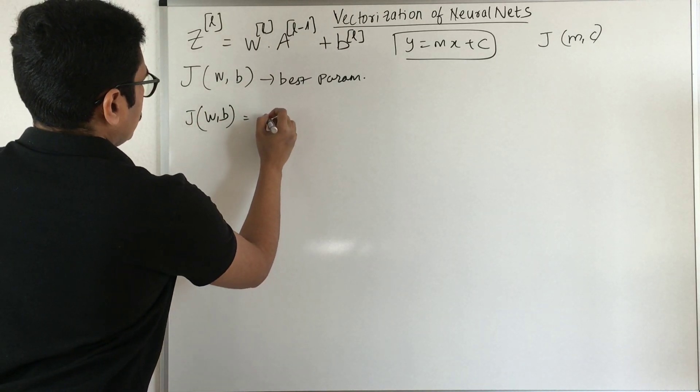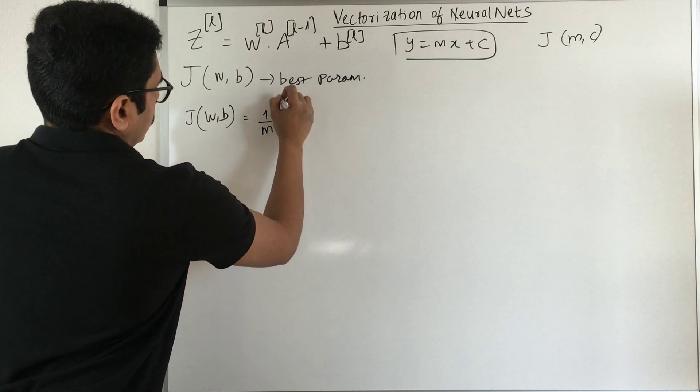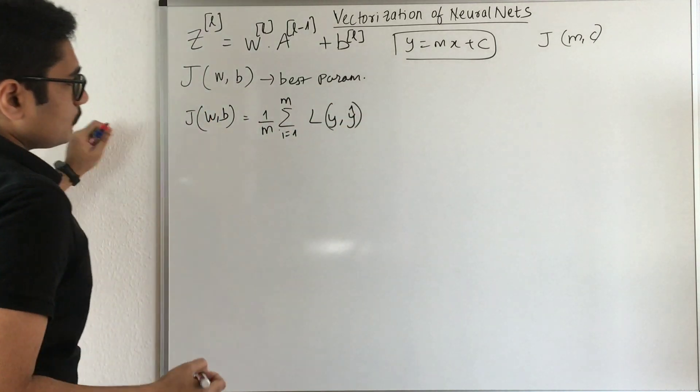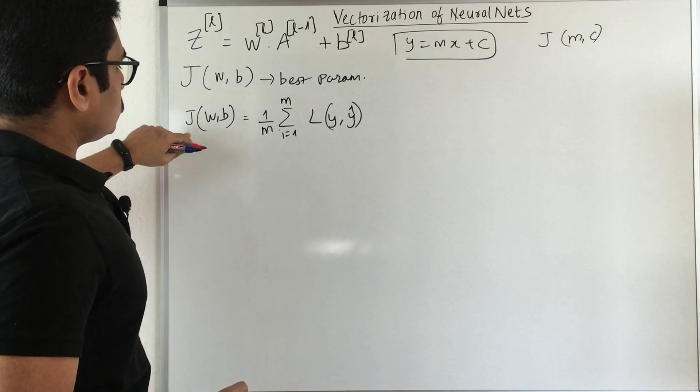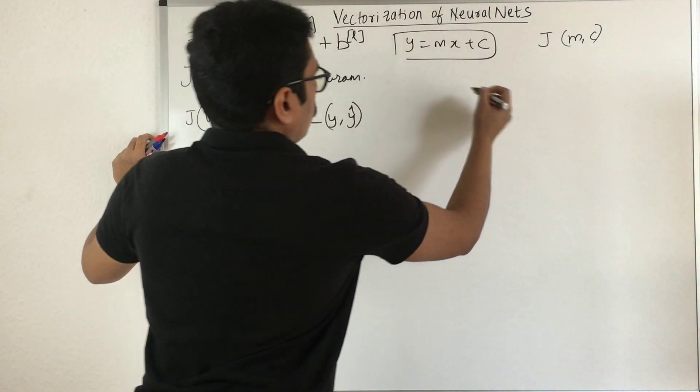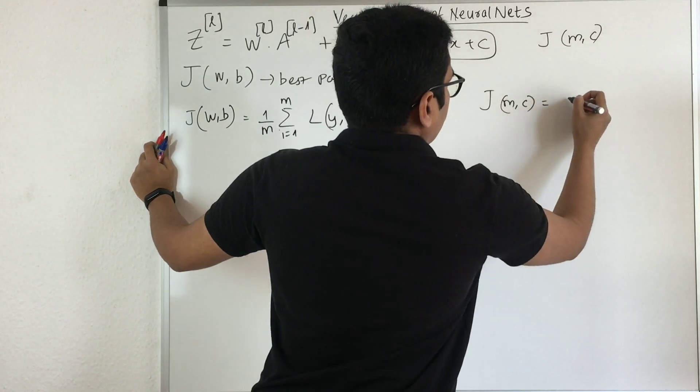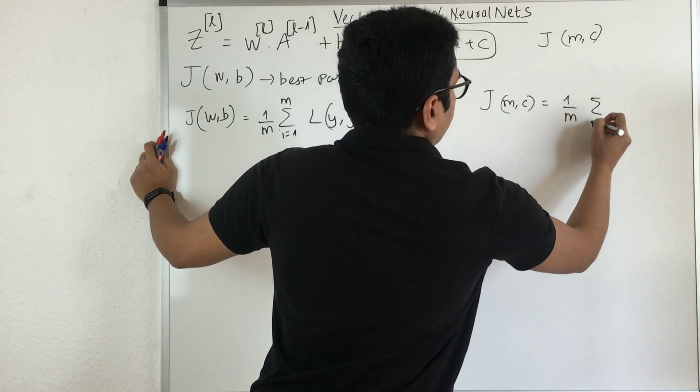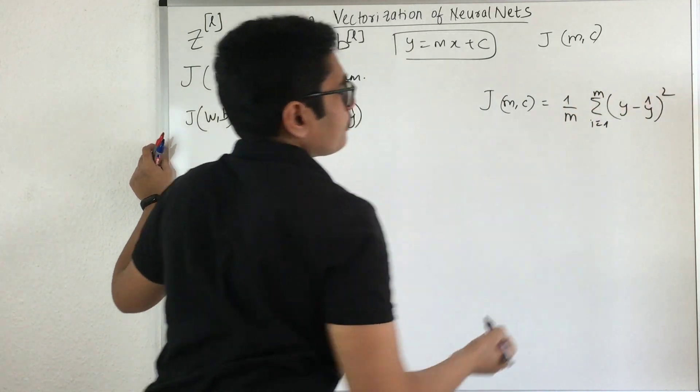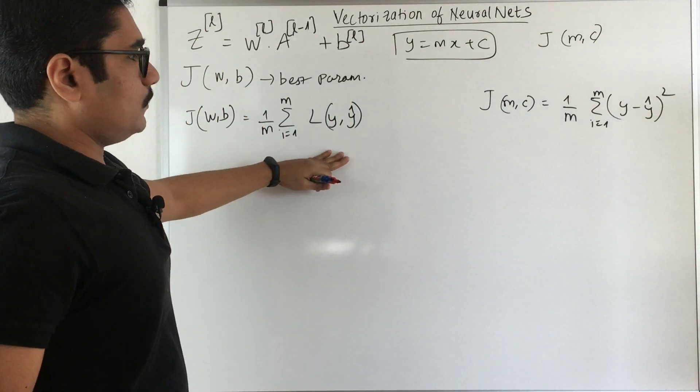The cost of this neural network can be represented as one upon M, where M is the number of training examples, times the sum of loss between y and y cap. This cost function is represented in terms of the loss function. In linear regression you have a similar setup where i equals 1 to M, y minus y predicted squared.